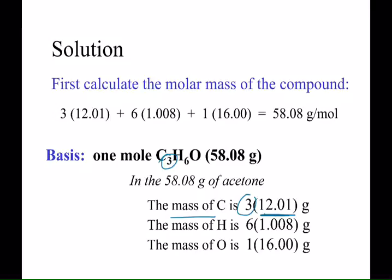I like these problems. For hydrogen, there are six hydrogens and they each weigh 1.008 grams if this is on one mole basis of acetone. So that's the total mass of hydrogen. The total mass of oxygen of course, since there's only one, will be 16.00 grams.